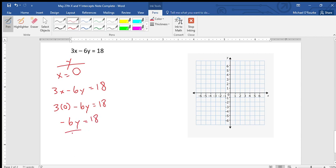I divide by my coefficient—negative 6. These cancel out, give me y, and this will be negative 3. So I can plot that.